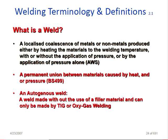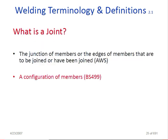What is an autogenous weld? It is made without the use of filler metal and can only be made by TIG and oxy-gas welding — that is called an autogenous weld. What is a joint? As a welding inspector you must remember: a joint is the junction of members or the edges of members that are to be joined or have been joined.